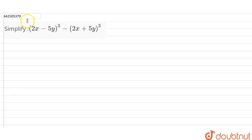Hi students, our question is: simplify (2x minus 5y) whole cube minus (2x plus 5y) whole cube.